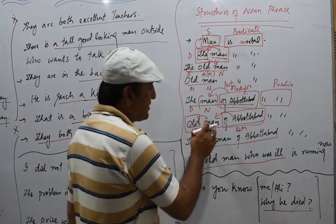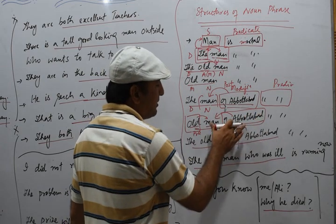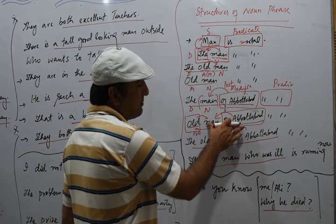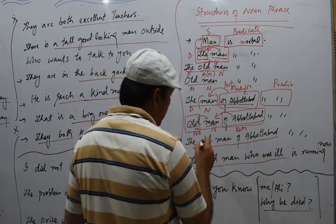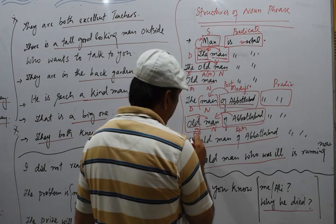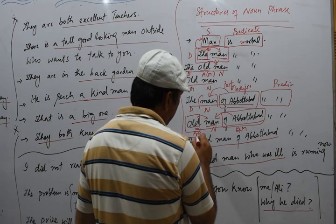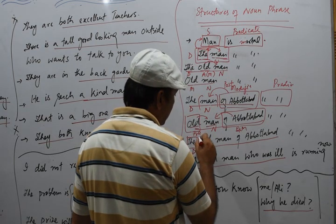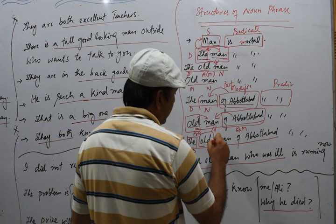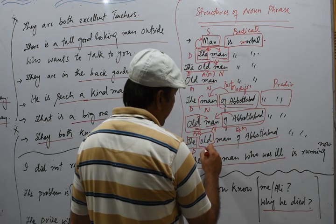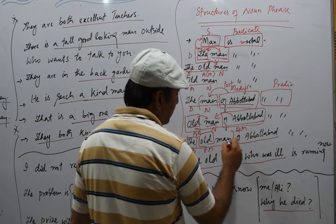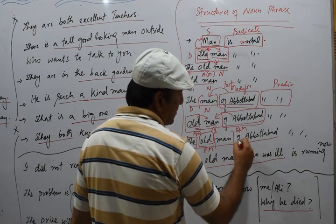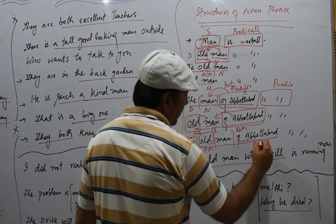So 'the man of [village] is mortal' — this is another noun phrase which is a subject. Then we have 'the old man' once again: the determiner, 'old' as pre-modifier, 'man' as keyword, and 'of [village]' as post-modifier.